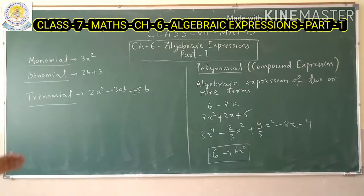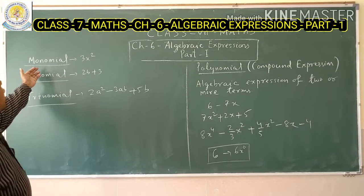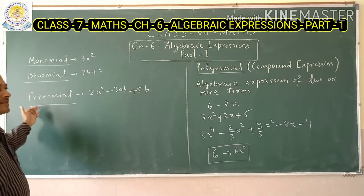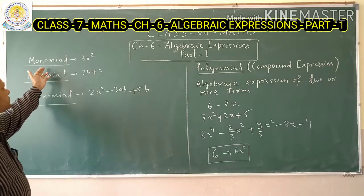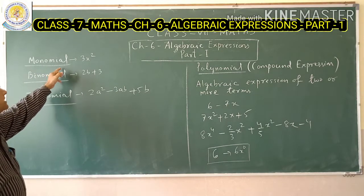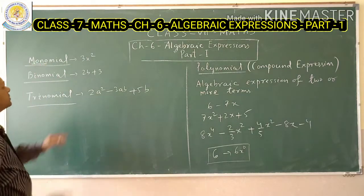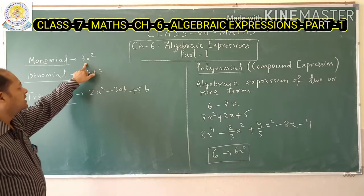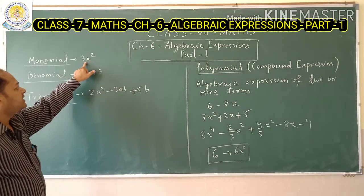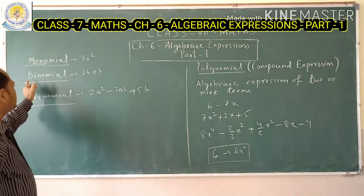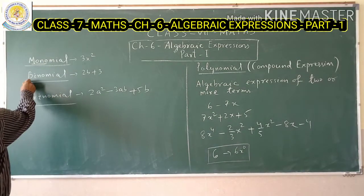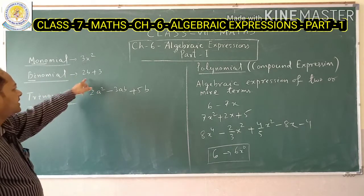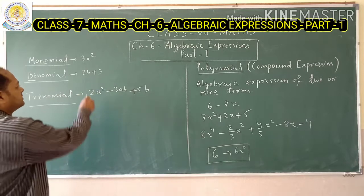Now let's discuss some more concepts: the types of algebraic expressions — monomial, binomial, and trinomial. The word 'monomial' means single or one. So an algebraic expression with a single term is a monomial; for example, 3x² is a monomial. 'Bi' means two, so whenever there are two terms, it is called a binomial — for example, 2b plus 3.